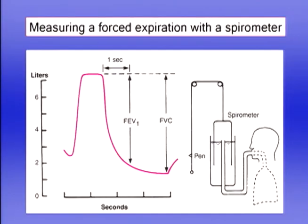One of the most important tests in pulmonary function is the forced expiration. It's shown here using a spirometer, though these days we use electronic equipment. The subject takes an inspiration to total lung capacity and then breathes out as hard and as far as possible. We plot volume against time. The total volume exhaled is the forced vital capacity, or FVC, and the volume exhaled in the first second is the FEV1.